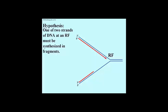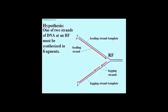Here is our replication fork modeling continuous synthesis of one strand of DNA in the 5' to 3' direction towards a replication fork, and the replication of fragments of DNA, also 5' to 3', but extending away from the replication fork. The strand made continuously is called the leading strand, while the strand made in pieces is called the lagging strand, in part because its synthesis is slowed down by the need to put the pieces together.